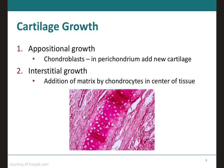Cartilage growth occurs in two different formats: appositional growth and interstitial growth. Appositional means placing things in proximity; therefore, appositional growth means the chondroblasts present in the perichondrium are the ones that will add new cartilage from the outside. Interstitial means fluid found in spaces around cells; therefore, interstitial growth means addition of matrix by the chondrocytes in the center of the tissue — it is growth from within the cartilage.